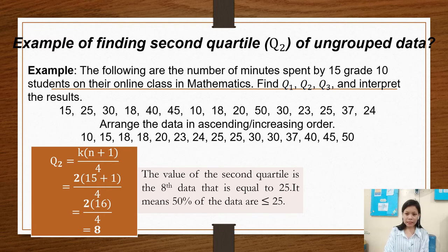Example of finding a second quartile of ungrouped data. So here we have the second quartile. So our k is 2. The total number of data is 15 plus 1 over 4. So 2 times 15 plus 1 is 16 times 2 over 4. 16 times 2 is 32 over 4, which equals 8. So the value of the second quartile is the 8th data, that is equal to 25.